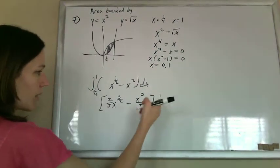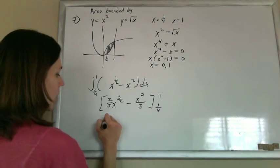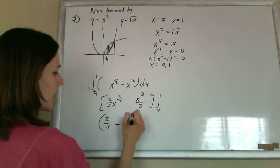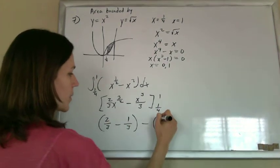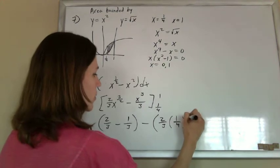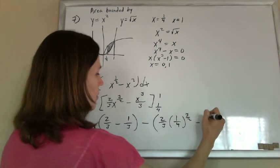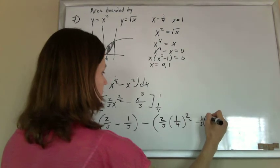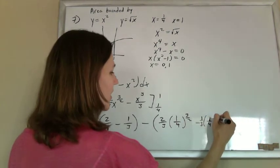One-fourth and one. All that's left to do is plug in the one, so I get that, and subtract what I get when I plug in the one-fourth. One-fourth to the three-halves minus one-third times one-fourth cubed.